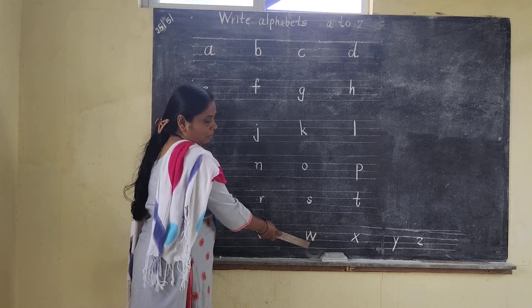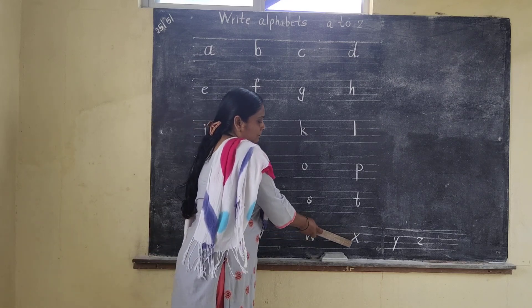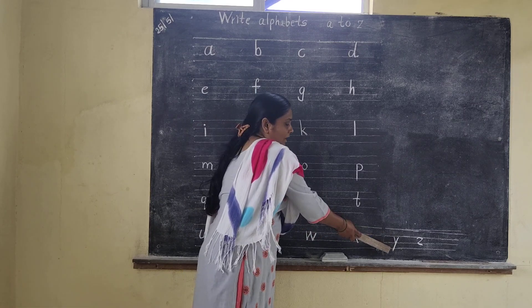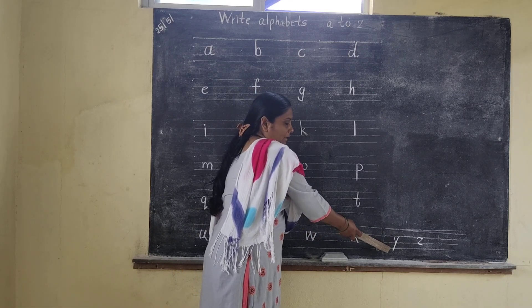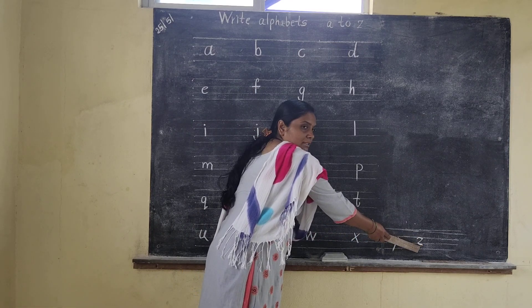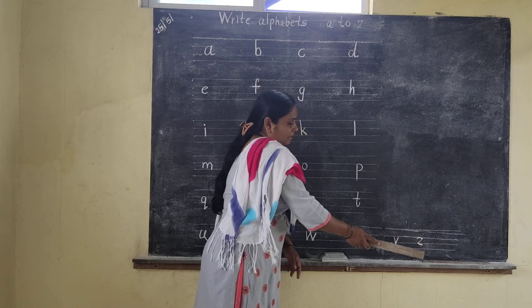W for mace. X for x-ray. Y for yard. And Z for z-brown.